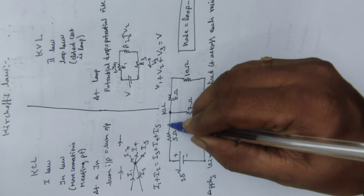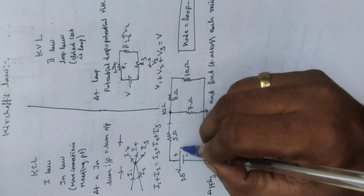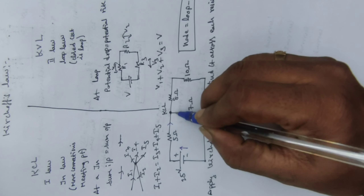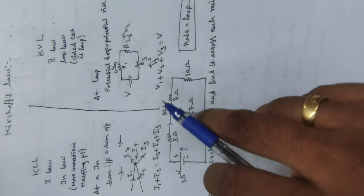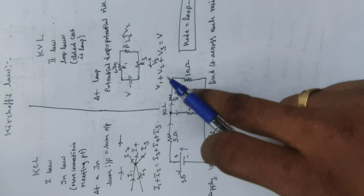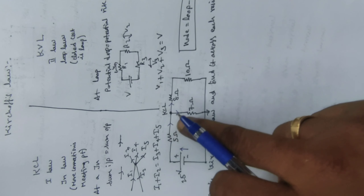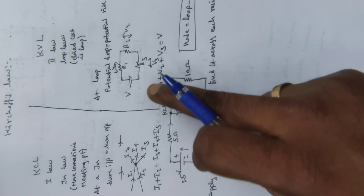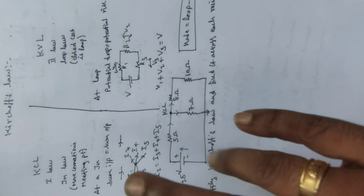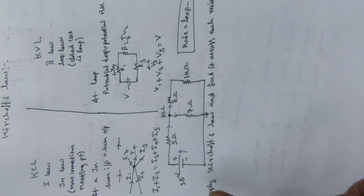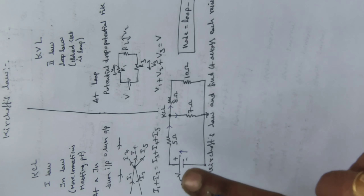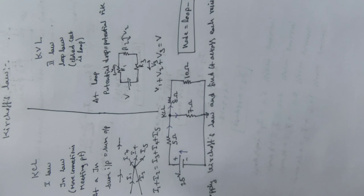According to the current law statement, from the source I am getting a current in a certain direction, and it comes to this junction. At the junction the current splits — wherever we have a parallel connection, we have a splitting of current. The given current splits into two. This current direction assigned by KCL is what the voltage law must also follow; you should not change the current direction while applying voltage law. How many loops there are, that many loop equations you need to write.